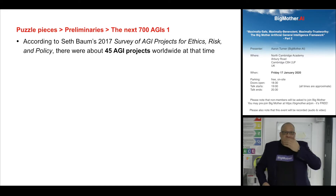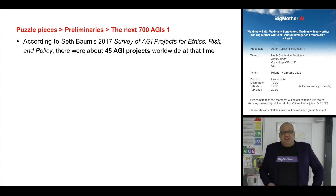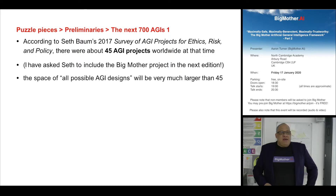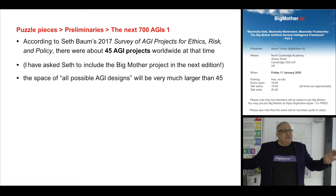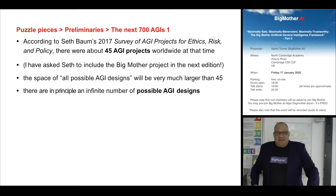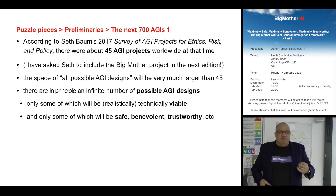There's a chap called Seth Baum at the Global Catastrophic Risk Institute who did a survey recently of AGI projects, and there are about 45 apparently. Now if you imagine the space of all possible AGI designs — all possible ways you might build an intelligent machine — there's probably thousands of them, possibly an infinite number, only some of which will be technically viable, and in particular only some of which will be safe, benevolent, and trustworthy.